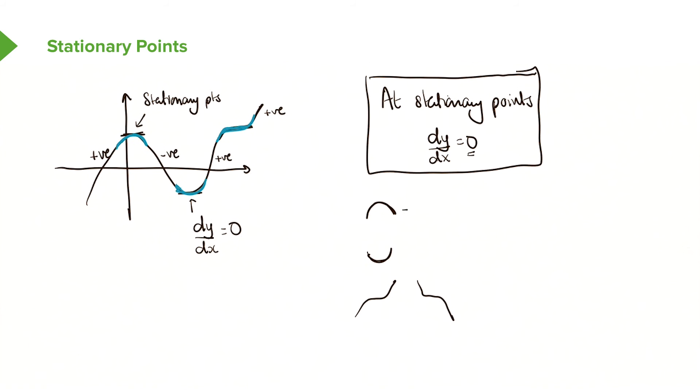Think about this point here, and if you think about this in the graph here. This is the highest this curve is reaching. So essentially we call this a maximum point, or a maximum stationary point.